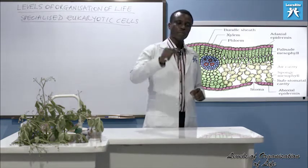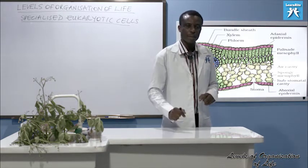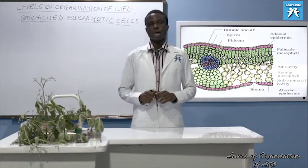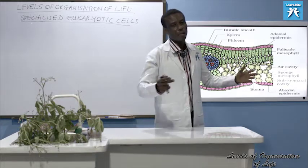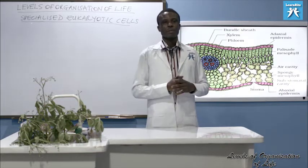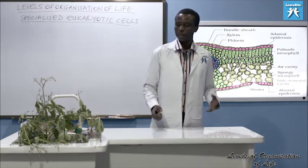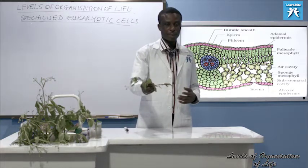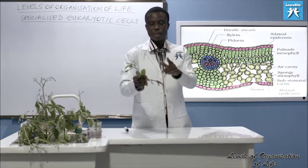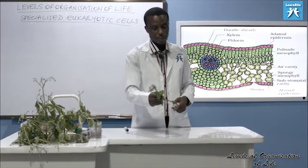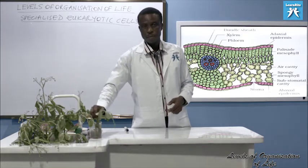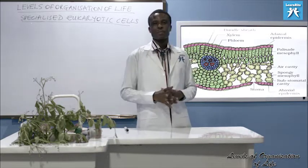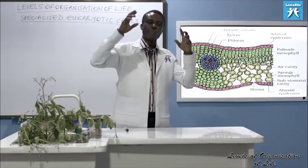The specific name for the photosynthetic cell is palisade mesophyll. And where do you think photosynthetic cells are found? Is it not in the leaf? Because in the plant, the leaf is for photosynthesis. And that is not the entire leaf — a specific part of the leaf.